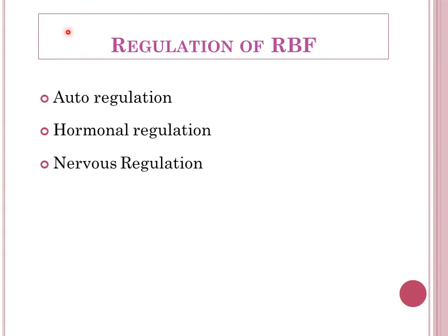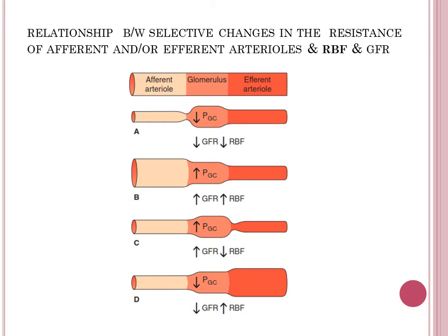The kidney receives high blood flow and maintains it depending on need. The regulation of renal blood flow occurs via three basic mechanisms: first is autoregulation, where the kidney itself regulates its blood flow; second is hormonal regulation; and third is neuronal regulation. Before discussing regulation, let's look at the relationship between changes in resistance of the afferent and efferent arterioles and how that determines renal blood flow and GFR.